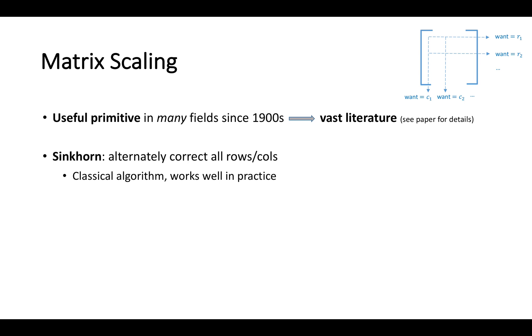A classical algorithm for matrix scaling is Sinkhorn, which simply alternates between correcting all the rows and all the columns. It works very well in practice, and in our paper we show that it converges in L1 in near-linear time.